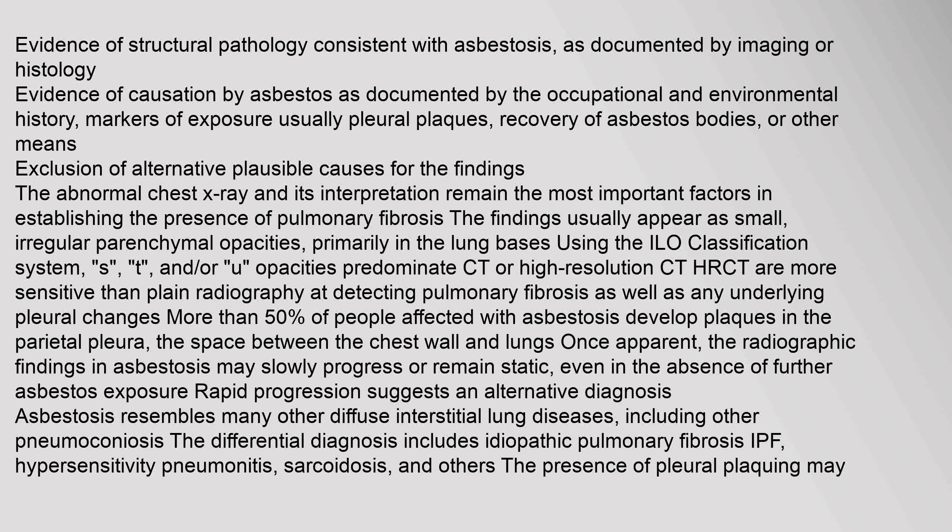Diagnosis requires evidence of structural pathology consistent with asbestosis, as documented by imaging or histology; evidence of causation by asbestos as documented by occupational and environmental history; markers of exposure such as pleural plaques or recovery of asbestos bodies; and exclusion of alternative plausible causes. The abnormal chest X-ray and its interpretation remain the most important factors in establishing the presence of pulmonary fibrosis. The findings usually appear as small, irregular parenchymal opacities, primarily in the lung bases using the ILO classification system — S, T, and/or U opacities predominate.